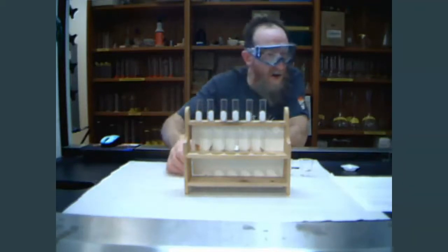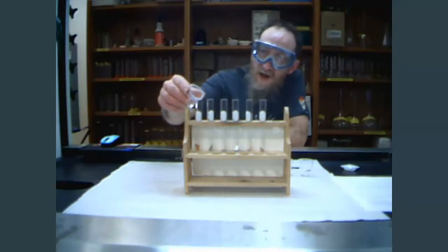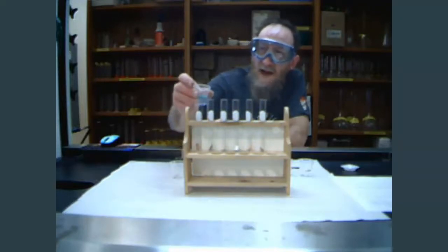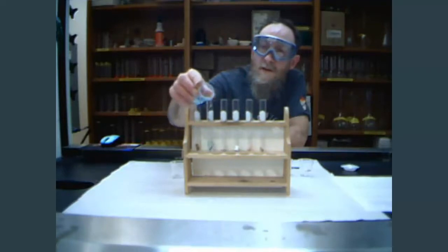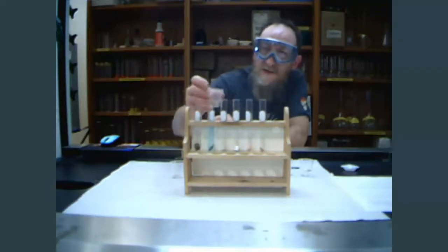In the first test tube here, I'm going to add some silver nitrate to my piece of copper. The second one, I have some copper nitrate. To the third test tube with the zinc, I have some lead nitrate.